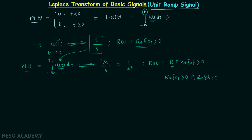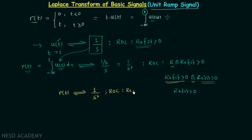We are performing the intersection of two identical regions, so we get the same region. The final ROC is the real part of s greater than 0. We have now calculated the Laplace transform and region of convergence of the unit ramp signal: the Laplace transform is 1 over s squared and the region of convergence is the real part of s greater than 0 — the same ROC as for the unit step signal.